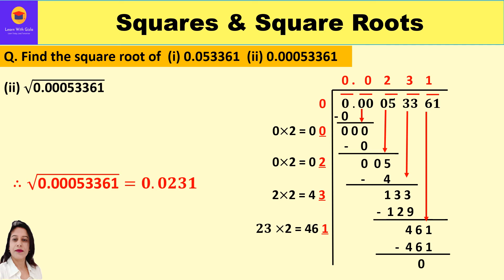Now let's take up the second part: finding the square root of 0.00053361 using the long division method. We follow the same process. The whole number part is 0, so the first period is 0. For the decimal part, we form pairs from left to right: the second period is 00, then 05, 33, 61. We start the long division with the first period 0.